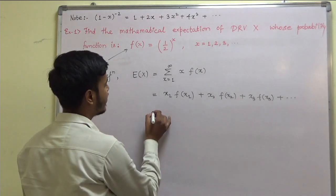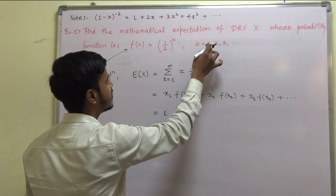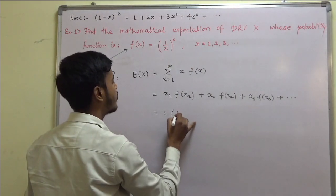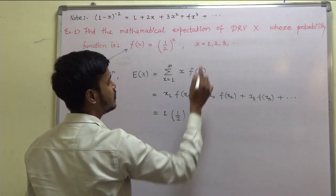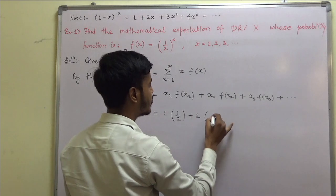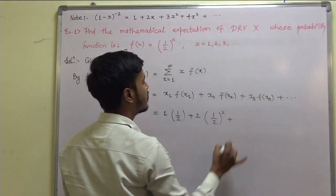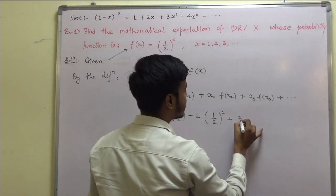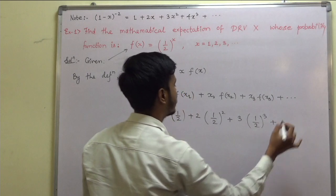Now substitute the values. What is x1? x1 is 1, so when you put x equal to 1 you get f of x1 equal to 1 by 2. What is x2? It is 2, and when you put x equal to 2 you get 1 by 2 squared. For x equal to 3, you get 1 by 2 cubed, and so on.